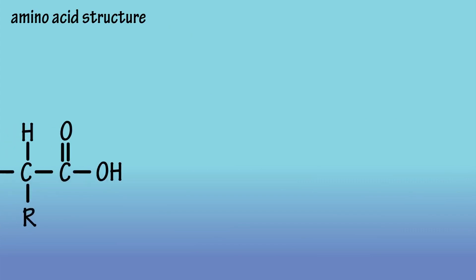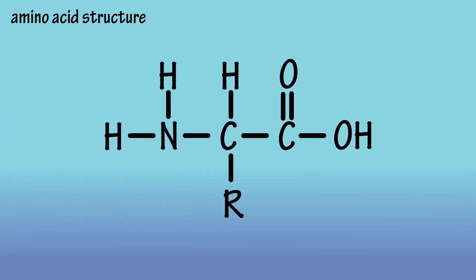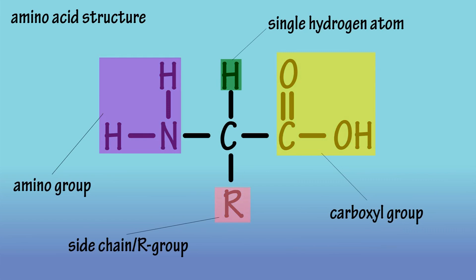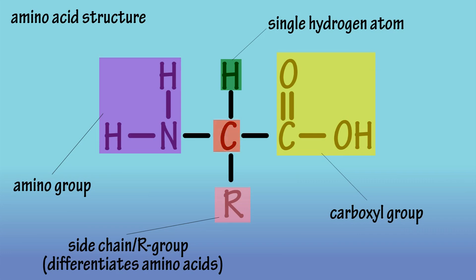We're going to start by looking at the molecular structure of a typical amino acid — I'm going to make this easy to understand. The basic structure of amino acids is that they consist of a carboxyl group, a lone hydrogen atom, an amino group, and a side chain. This side chain is often referred to as the R group, and its formation is what makes amino acids different from one another. As you can see in this diagram, these four are all connected to a carbon atom referred to as the alpha carbon. Not every amino acid follows this exact structure, but most do.